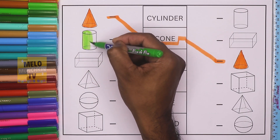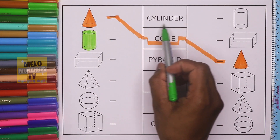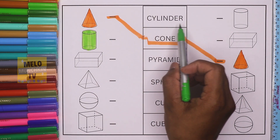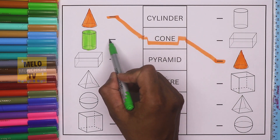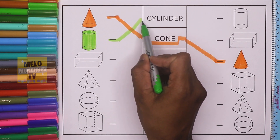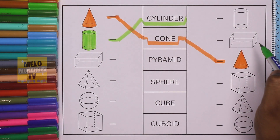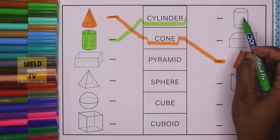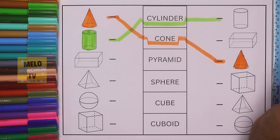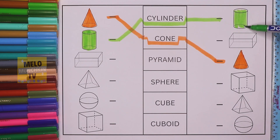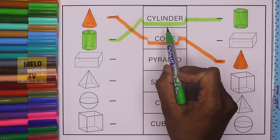Next, I'll take green color to color this shape. This shape is called cylinder. Now where is cylinder? In the first box you can see the name: cylinder — C, Y, L, I, N, D, E, R. I'll join it like this and then search for the cylinder from here. This is the cylinder in the first line. I'll color it. So this is cylinder in green color.